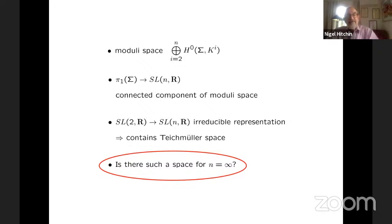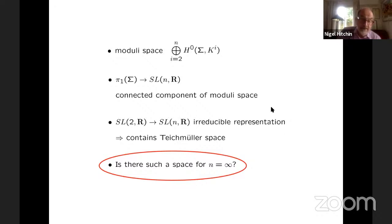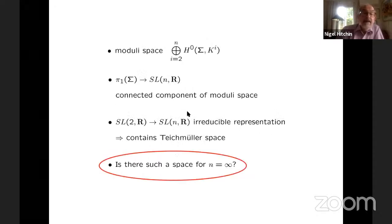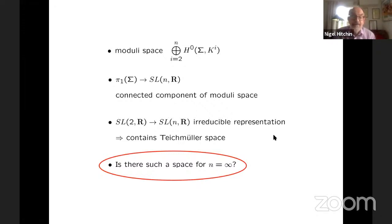So this is a generalized version of Teichmüller space, and it's a vector space. And not only that, but SL(2,ℝ) in its irreducible representation sits inside here. So if we take all the A₃s and above to be equal to zero and keep the A₂, then this is a copy of ordinary Teichmüller space sitting inside this bigger one. It corresponds to the irreducible representation of SL(2,ℝ) in SL(N,ℝ). So the question is, is there such a space for N equals infinity? And can we interpret this in terms of some geometry on the surface?